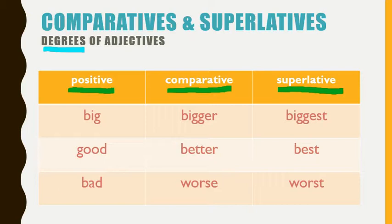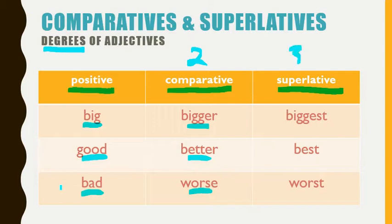The positive is your basic adjective as it is — something is big, good, or bad. If you have two things and you're trying to compare them, we use the comparative degree and we say one is bigger, better, or worse than the other. So this is only for two things, and that's what you need to remember. If you are talking about three or more objects, then you need to use the superlative form and say that one of them is the biggest, the best, or the worst.